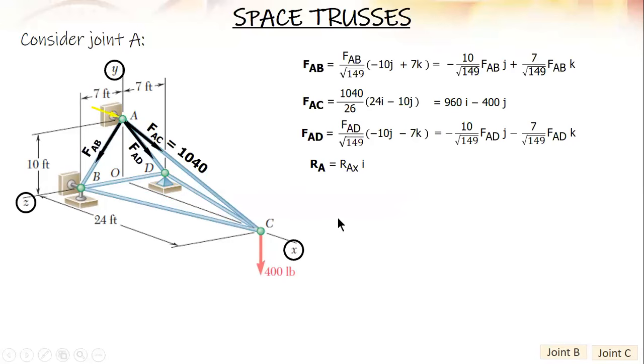After this, apply conditions of equilibrium. Start with summation of force X equal to zero. Group all components with unit vector I. You have RAX and 960. Take note this is a constant, so transpose to the right side, it becomes negative. RAX equals negative 960. Summation of force Y—all components with J unit vector. The constant is transposed, so it becomes positive 400.